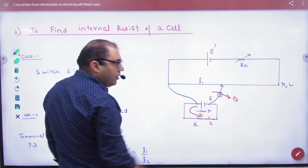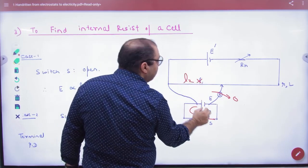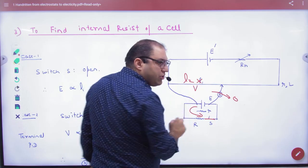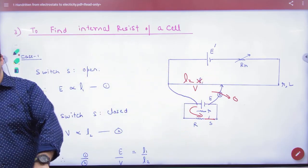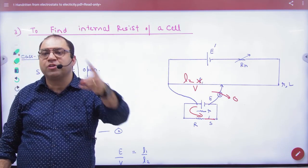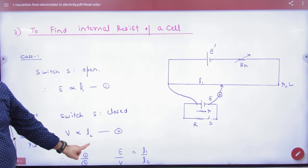Now the balancing length L2 we have done. But instead of developing E, it will develop V, because when current comes out of the cell, then E will not show but it will show less than E which will be V. So we will do V proportional to L2.